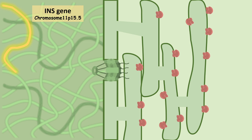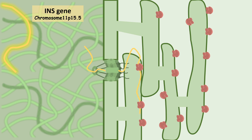Let's look at how insulin synthesis or insulin biogenesis takes place. From the insulin gene located on chromosome 11, mRNA is produced. This mRNA moves out through the nuclear pore, and ribosomes sitting on the rough endoplasmic reticulum translate the mRNA into peptide. These peptides are the precursor form of insulin.